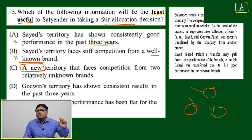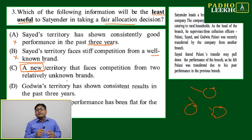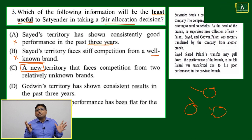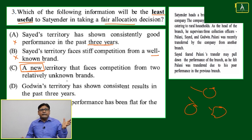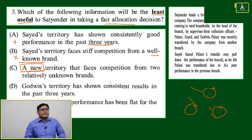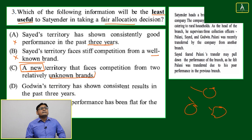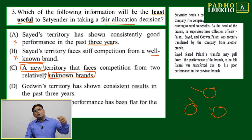A new trade territory has more unpredictable things. If you don't know about MBA, if you don't know about finance, it will be difficult — more unpredictable things will create problems. Then consider a new territory that faces competition from two relatively unknown brands. It's a new territory with unknown brands.